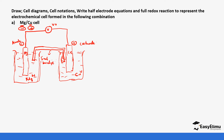Label the salt bridge and the voltmeter on your diagram. Since magnesium is losing electrons, the electrons flow from the magnesium electrode to the copper electrode. Show this with arrows in your diagram — that is how you indicate electron flow when answering questions.